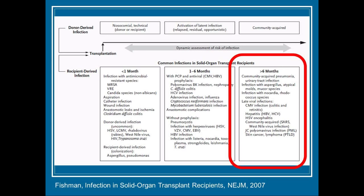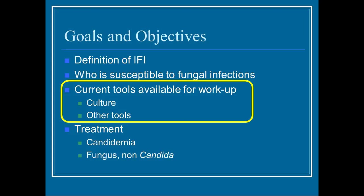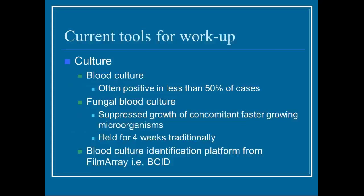Now let's talk about how we prove it — the current tools available. Culture is our backbone, though it's less in use now than in the past. Blood cultures are positive in less than 50% of cases. Fungal blood cultures suppress regular organisms to allow fungi to grow and are traditionally held for up to four weeks. There are now new items with PCR on the Film Array platform that can provide blood culture identification approximately one hour after your gram stain is positive.